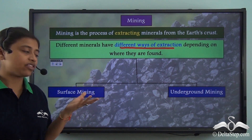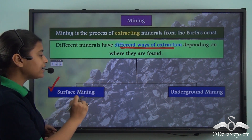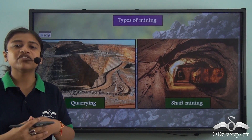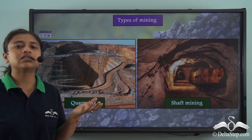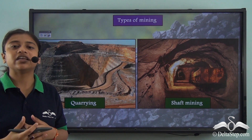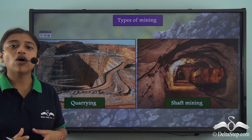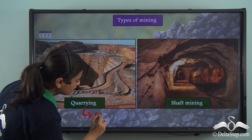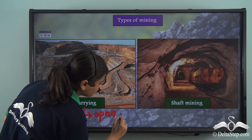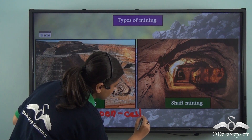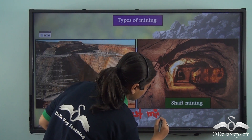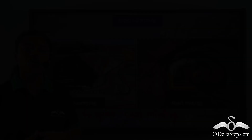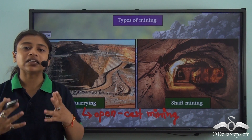Mining can be either surface mining or underground mining. The different types of mining include surface mining or underground mining. Surface mining generally includes open cast mining, or quarrying. Quarrying, also known as open cast mining, is the most common method of mining. On the other hand, we also have underground mining.